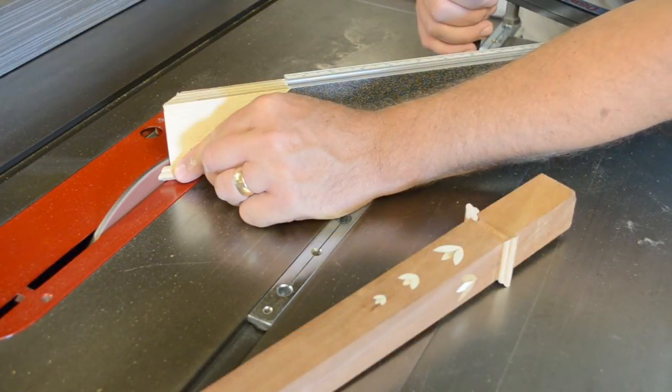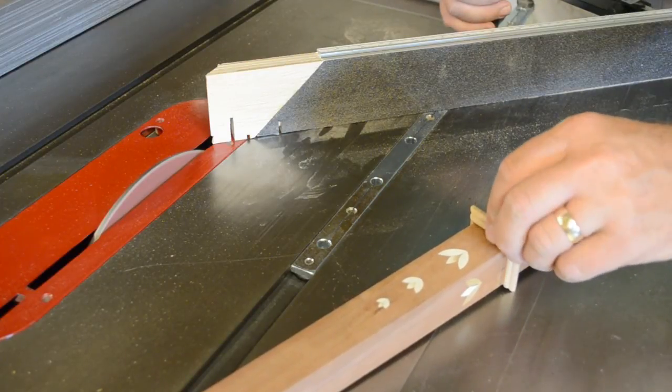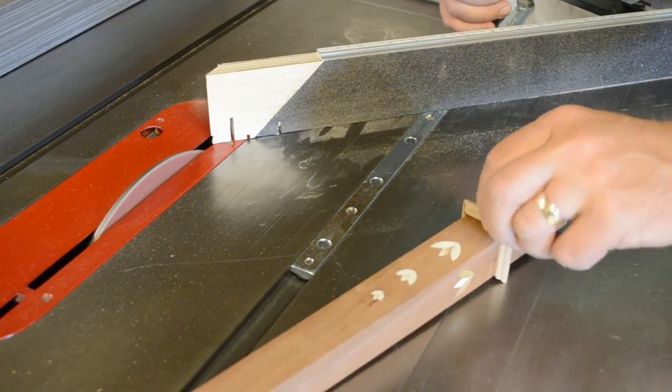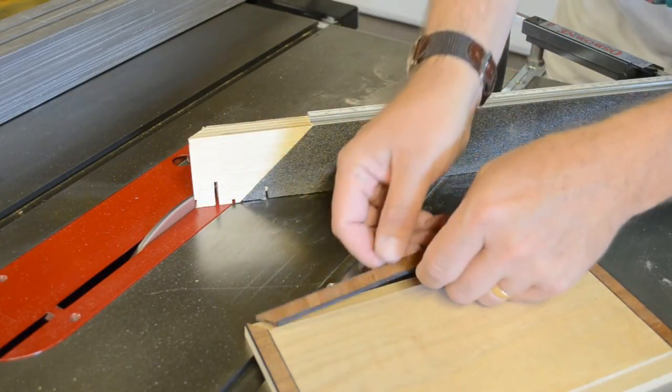Precise mitering and fitting a very small and fragile trim can be difficult and dangerous. Even fine-toothed saw blades can damage the pieces and require fingers to be too close to the blade.